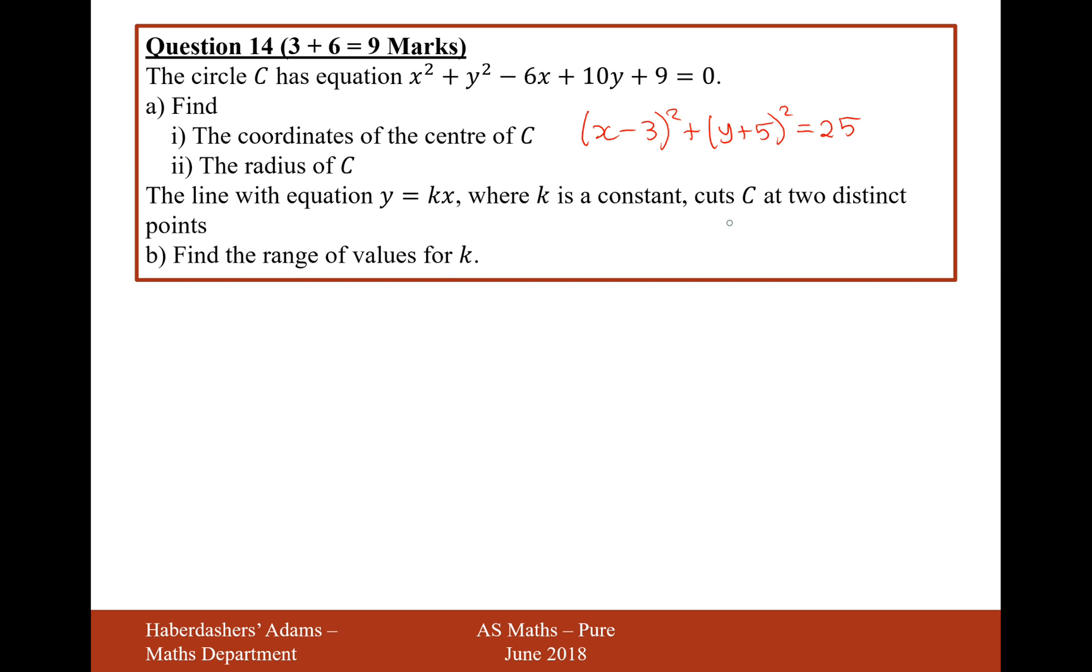What we're looking to do here is substitute this equation into this equation and then show that B squared minus 4ac is greater than 0, because that's when you have two distinct intersections, when your discriminant is greater than 0. Let's substitute it in then. It's going to be x minus 3 squared plus kx. I'm substituting the letter y with the expression kx because the two things are equal here. kx is going to replace y. So, kx plus 5 squared equals 25.